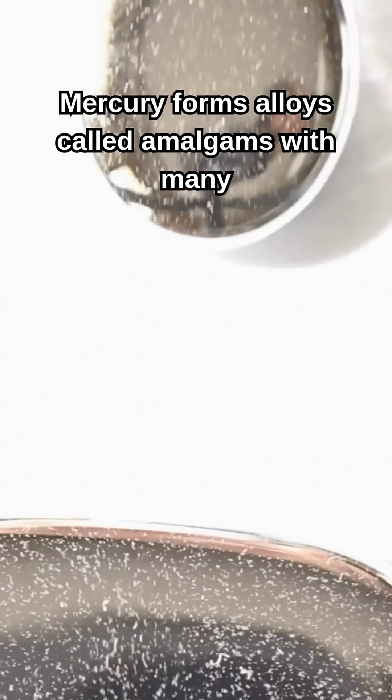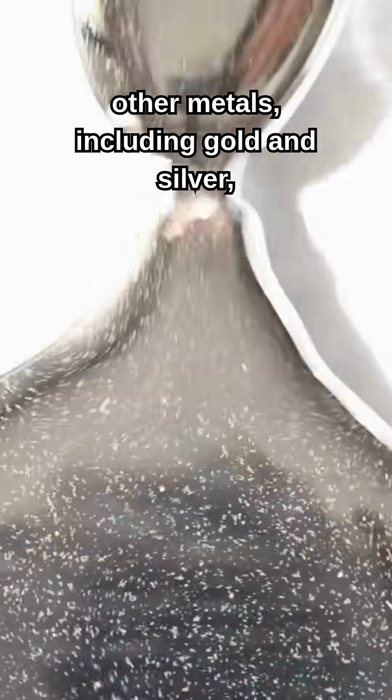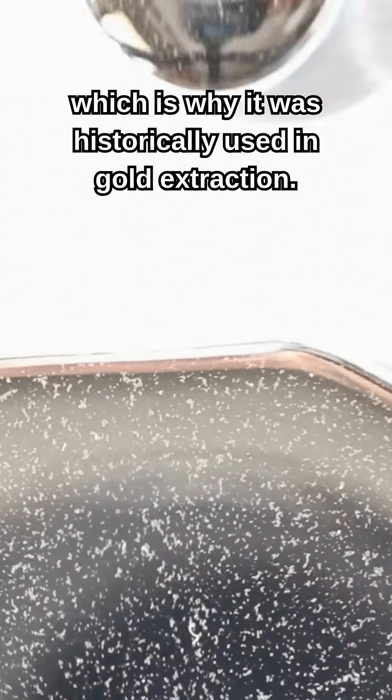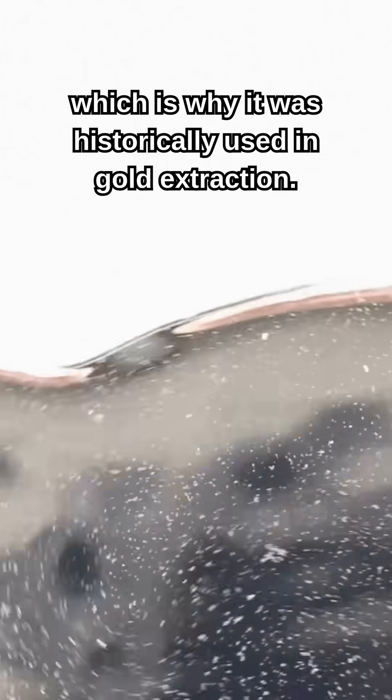Mercury forms alloys called amalgams with many other metals, including gold and silver, which is why it was historically used in gold extraction.